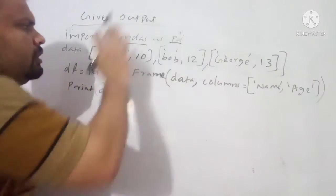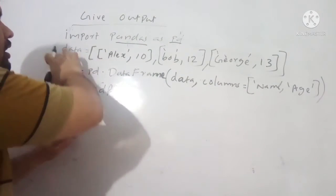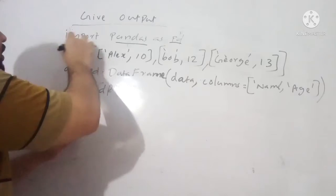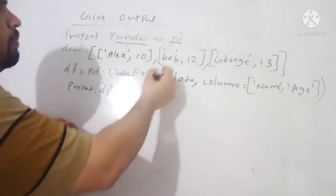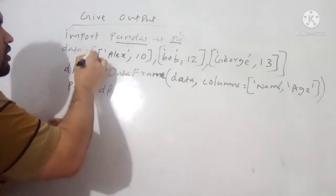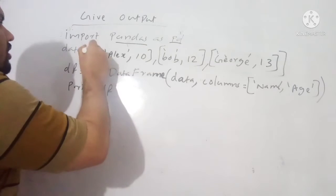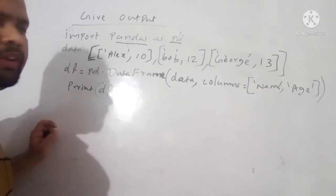So import pandas as pd, we are importing the python pandas package. The data equals, we are declaring a new variable data, is equal to Alex 10, Bob 12, George 30. Here you can see this is a list declaration, two list declarations. So list inside a list method we are using here.